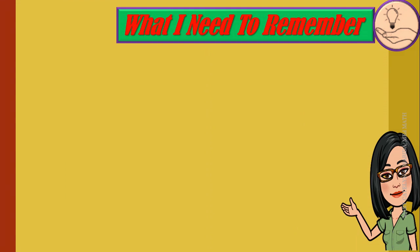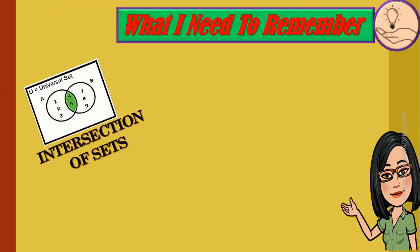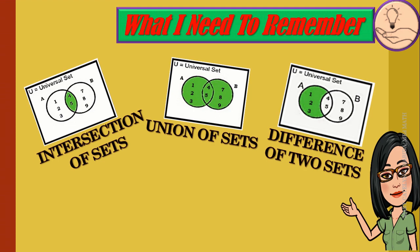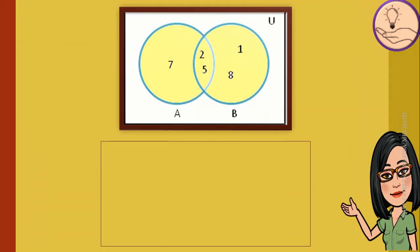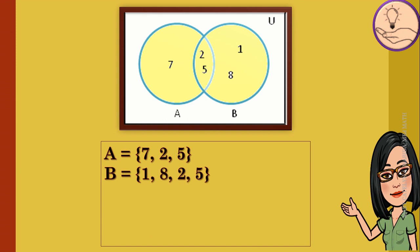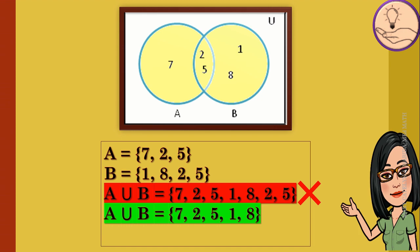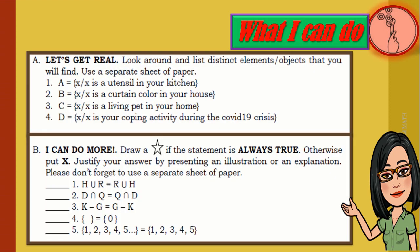These are the things you need to remember: the Venn diagram is used to illustrate set operations like intersection, union, and difference of two sets. Repetition of elements is not allowed when writing in roster or listing method — for example, the union of sets A and B is {7, 2, 5, 1, 8}, not with repeated elements. The cardinality of a set is based on the number of elements in the set. What you can do has two parts: 'Let's Get Real' and 'I Can Do More.'